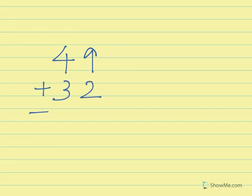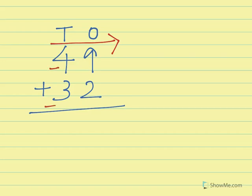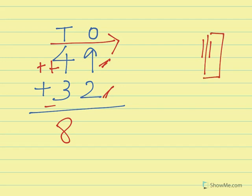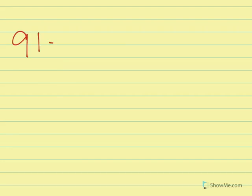Last example in this set: 49 plus 32. In the 10s position we have 4 and 3. In the 1s position we have 9 plus 2. We know 9 plus 2 is a carrying number since 9 plus 2 equals 11. So we add 1 to the tens: 4 plus 1 is 5, then 5 plus 3 is 8. The end number of 9 plus 2 is 1, so our final answer is 81.